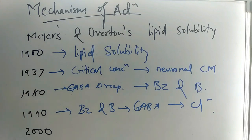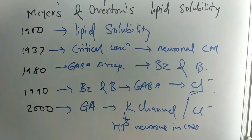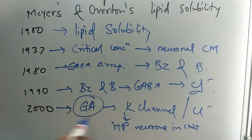In 2000, it was seen that general anesthesia opens the chloride channel or potassium channel, and then hyperpolarization of neurons in CNS leads to anesthetic effect.